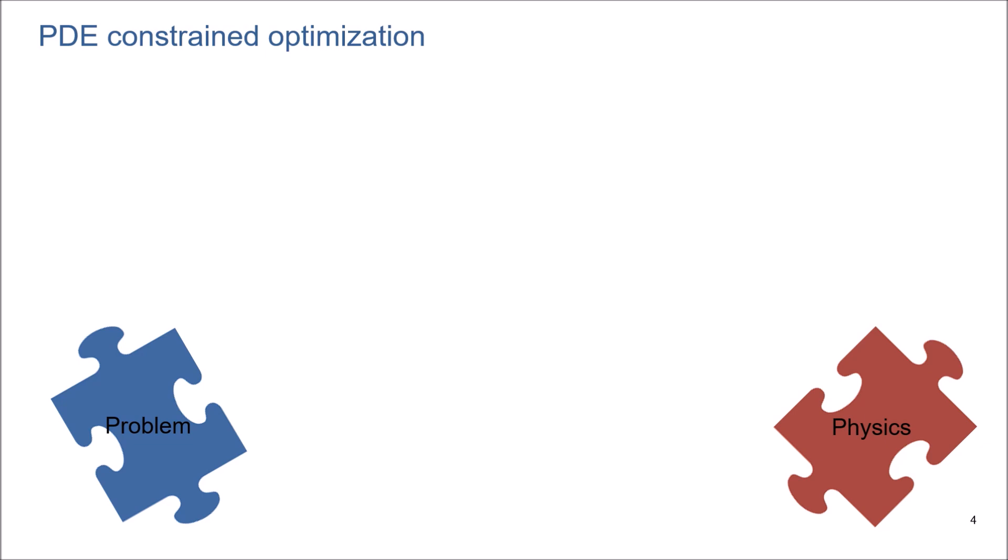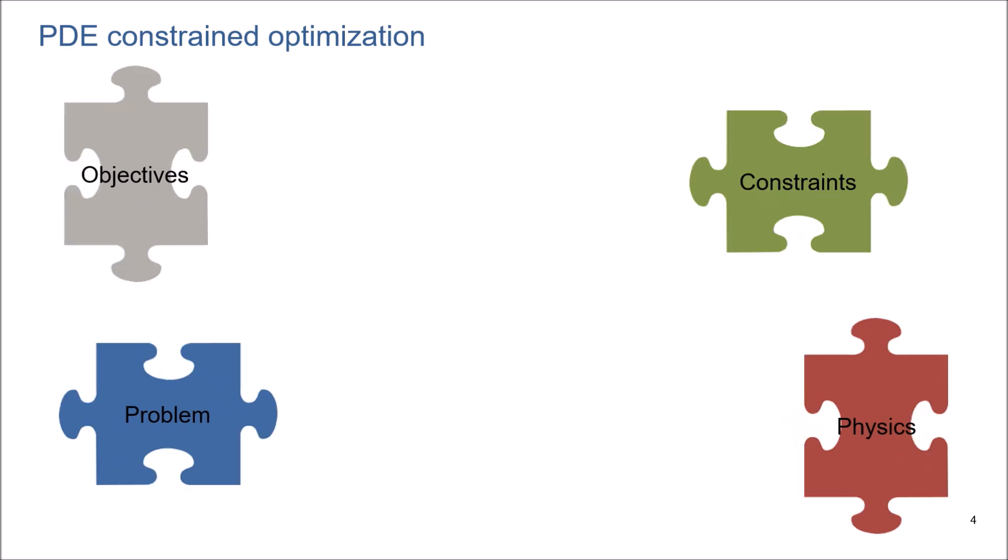Now, I can define the objective for this problem. The objective, for example, in structural mechanics, could be minimizing mass, maximizing stiffness, or any objective function related to enhancing performance. Let's put all of these puzzles together.